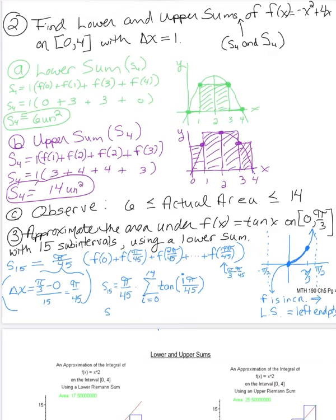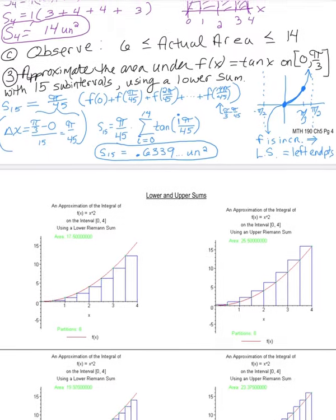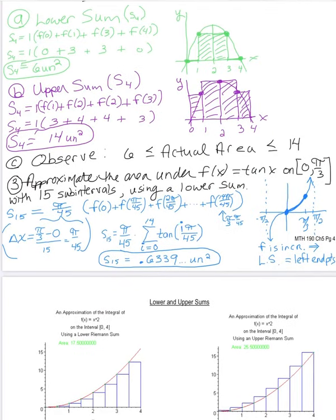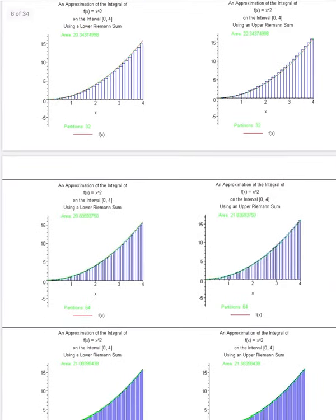When we evaluate this, it comes out to about 0.6339 square units. This is a lower sum, so it's an underestimate of the actual area, but using 15 rectangles we're probably pretty close. Next time we'll look at what happens as you increase your number of rectangles — you can visually see that as you add more, you get closer and closer to the actual area.